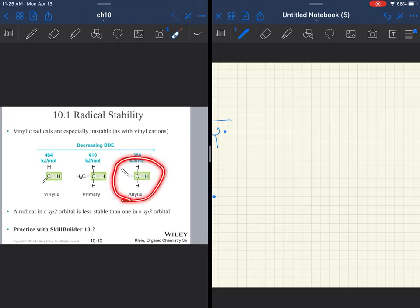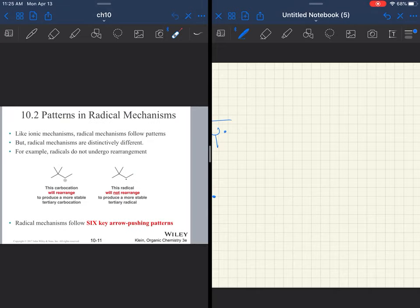Vinyl radicals are especially unstable, so just like we never made a carbocation directly on a double bond, you're not going to see a radical directly on a double bond. It's just very unlikely. It's much more likely to be on an SP3 carbon.